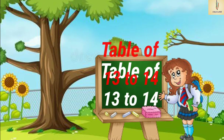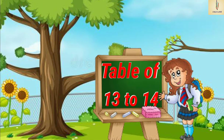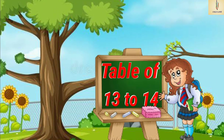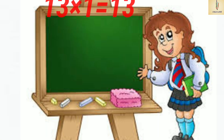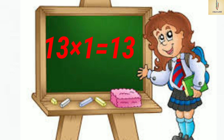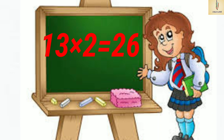Table of 13 to 14. Watch, listen and learn. 13 ones are 13. 13 twos are 26. 13 threes are 39.